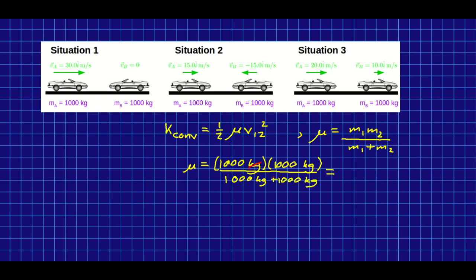Note the units, the kilograms take out the kilograms, but there's still one kilogram left in the numerator, and this one comes out to 500 kilograms. Notice it's smaller than the mass of either car. There's a reason this is called the reduced mass.